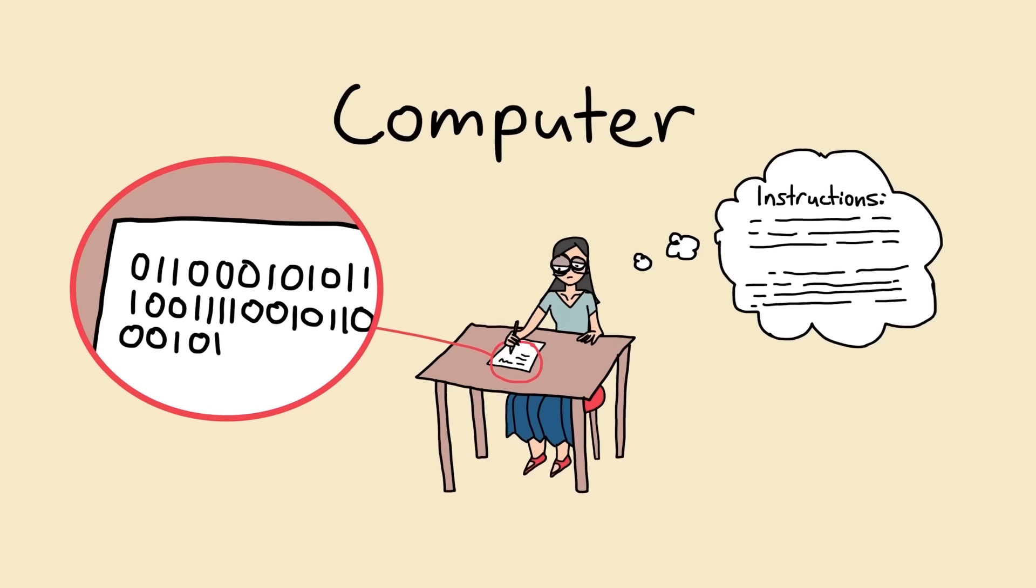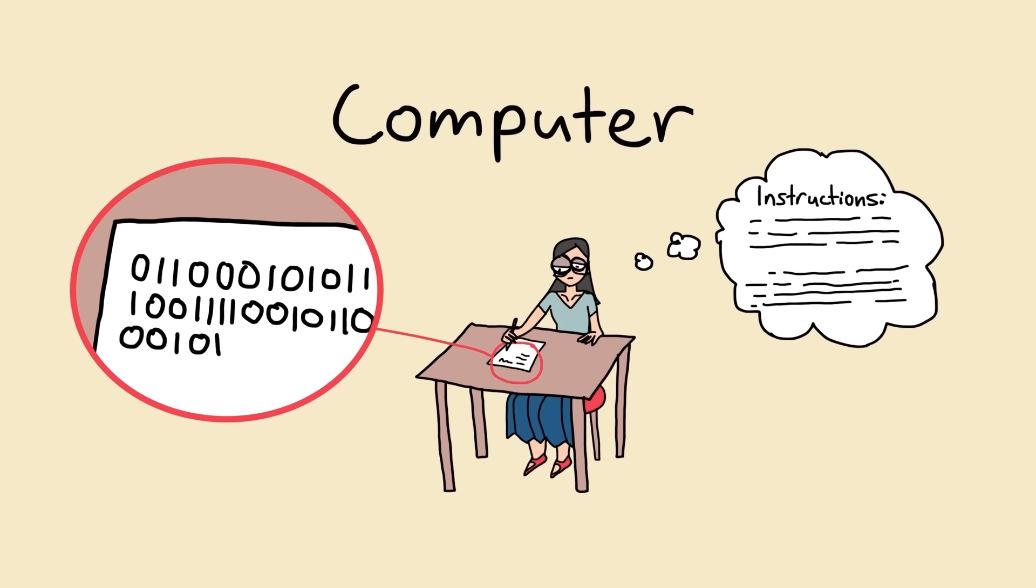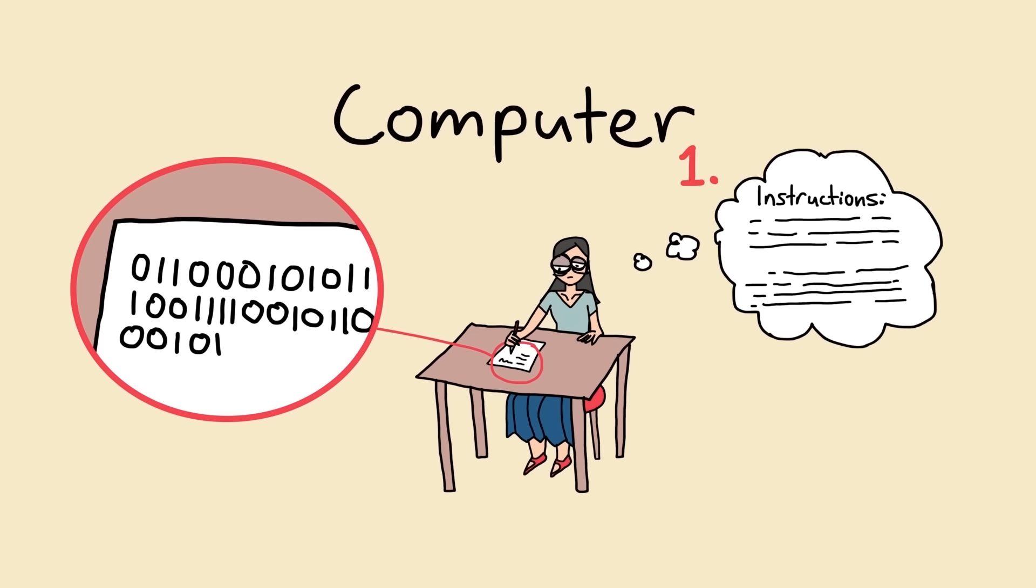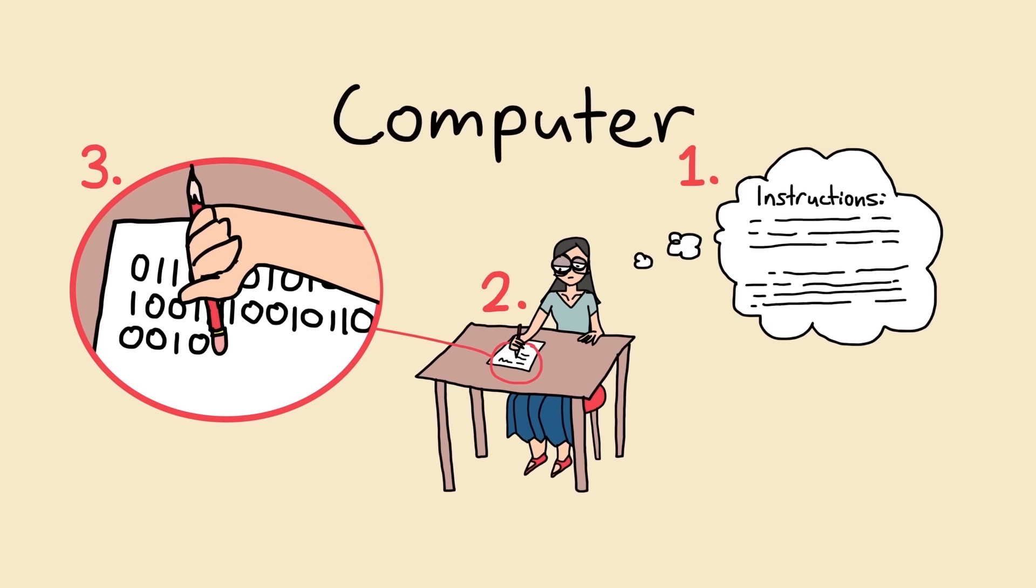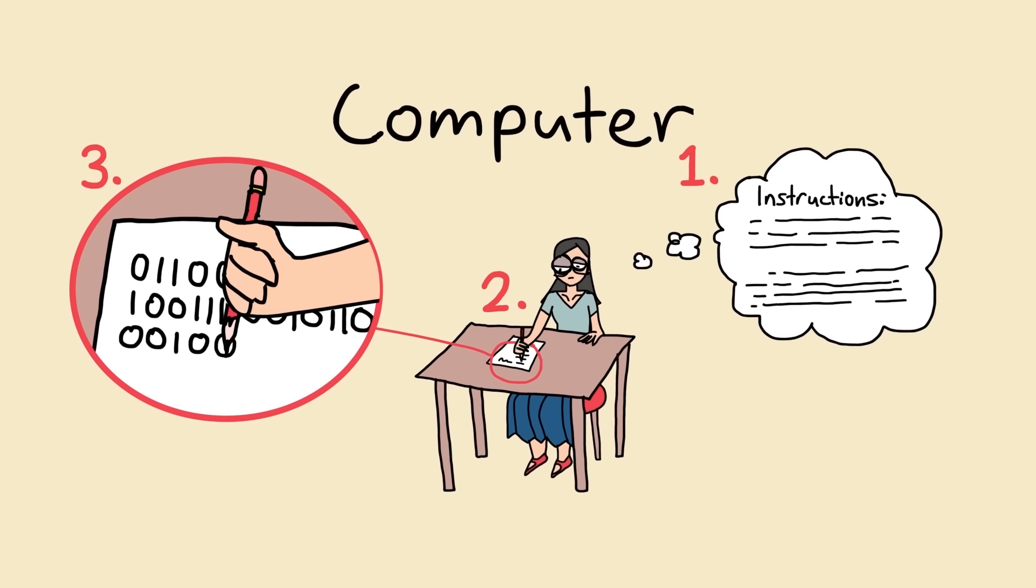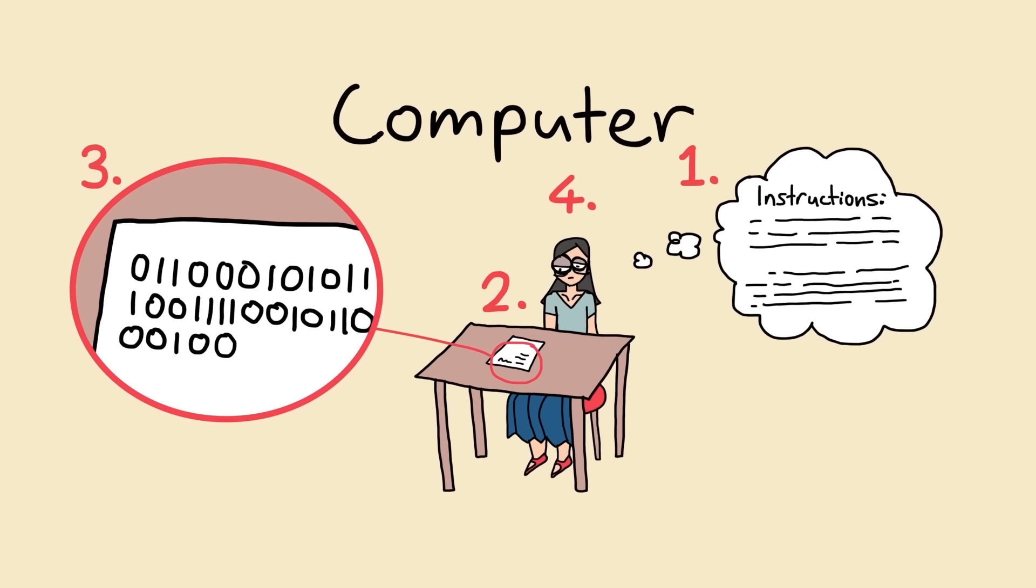He thought about the basic components of what a human computer does when they're computing. One, they read instructions. Two, they read and write symbols on a piece of paper according to the instructions. Three, they occasionally erase symbols and replace them with new symbols. And four, when they're finished with the computation, they stop. That was about it.